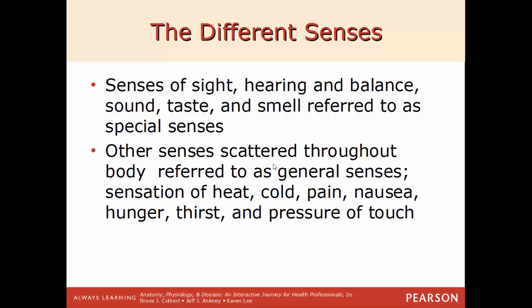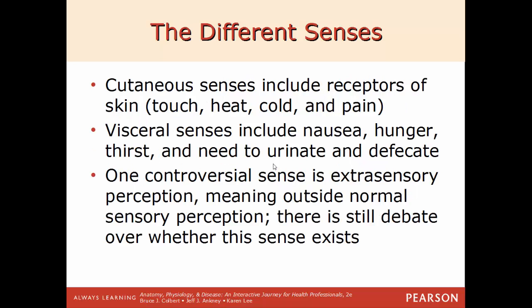The senses of sight, hearing, balance, sound, taste, and smell are known as special senses because their receptors are all contained within the head. The other senses are known as general senses — being able to feel heat, cold, pain, nausea, hunger, thirst, and pressure — because those receptors are distributed throughout the entire body. Basically, anything that you can touch is a general sense, while seeing, hearing, taste, and smell are confined to just your head.